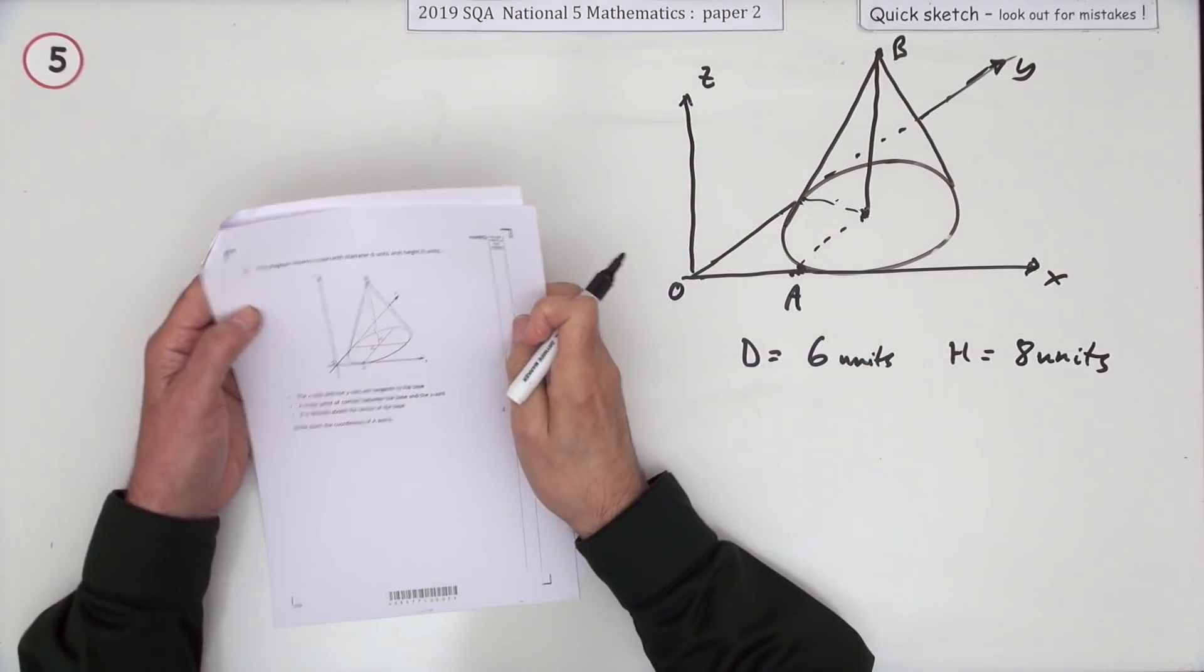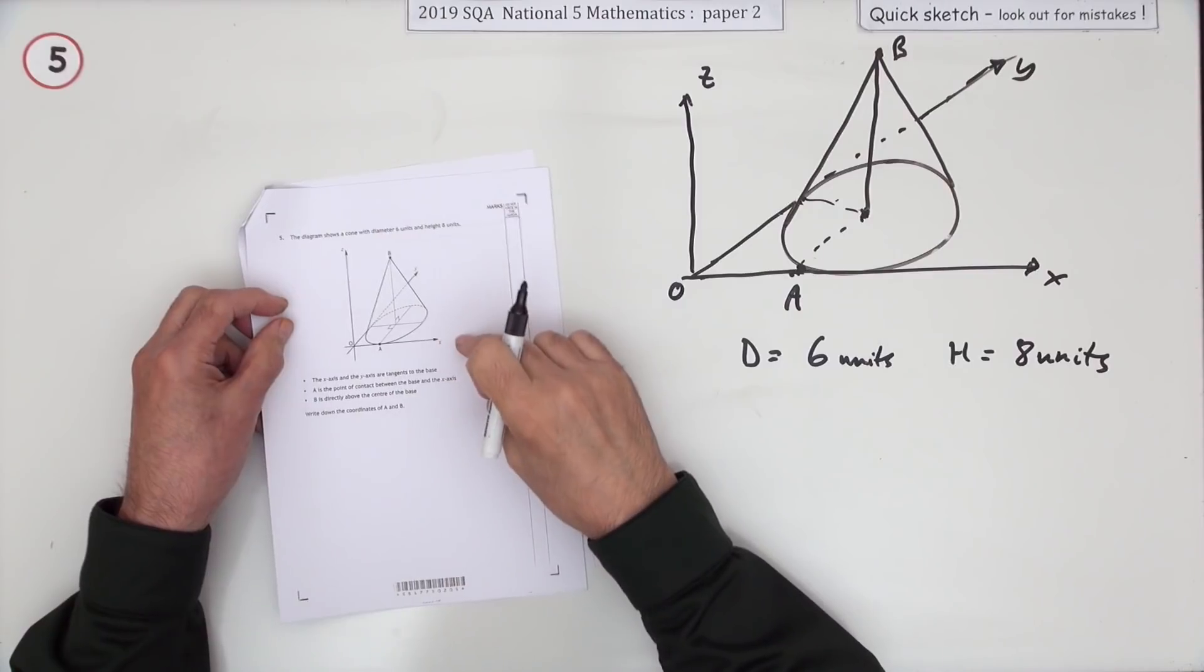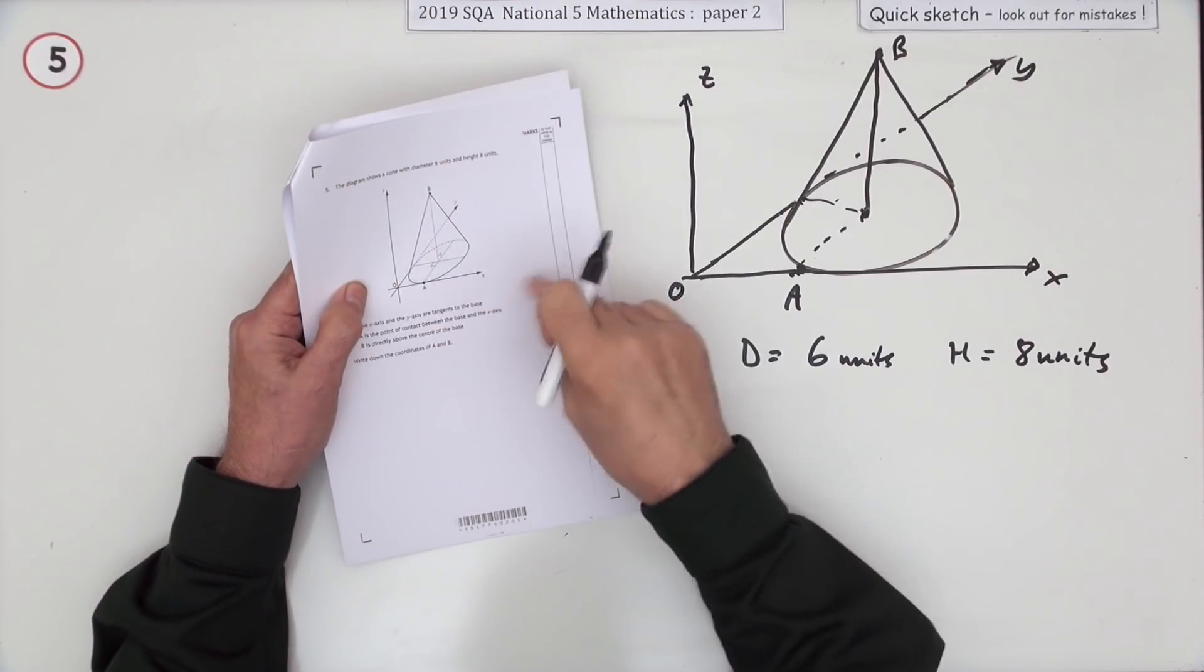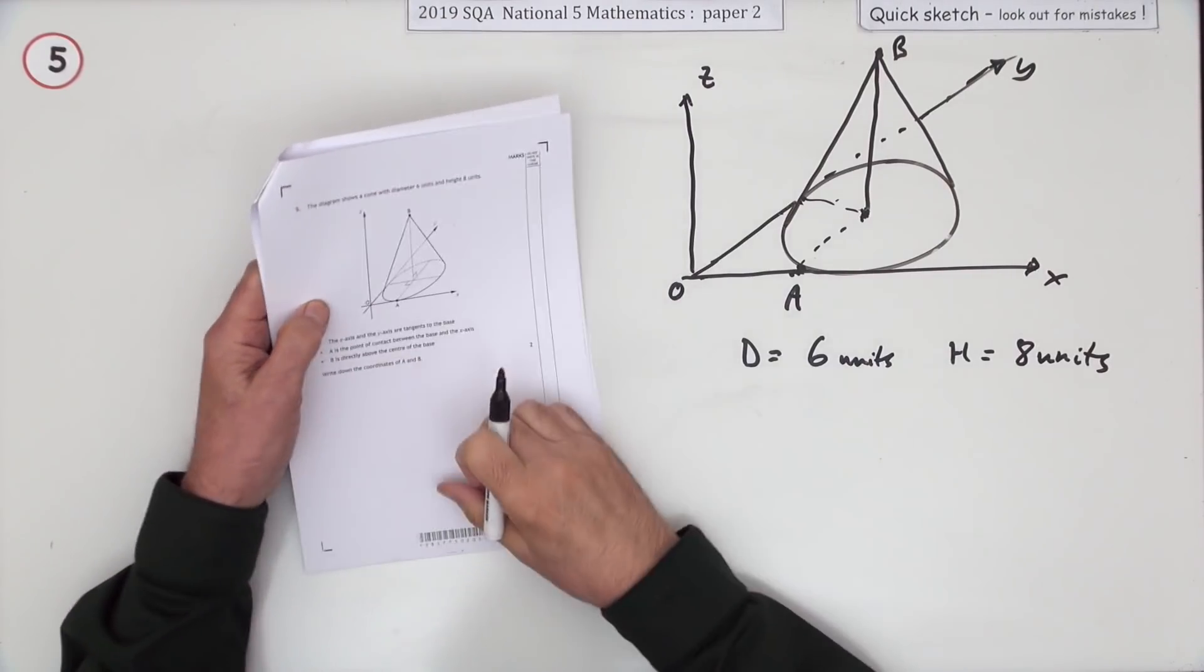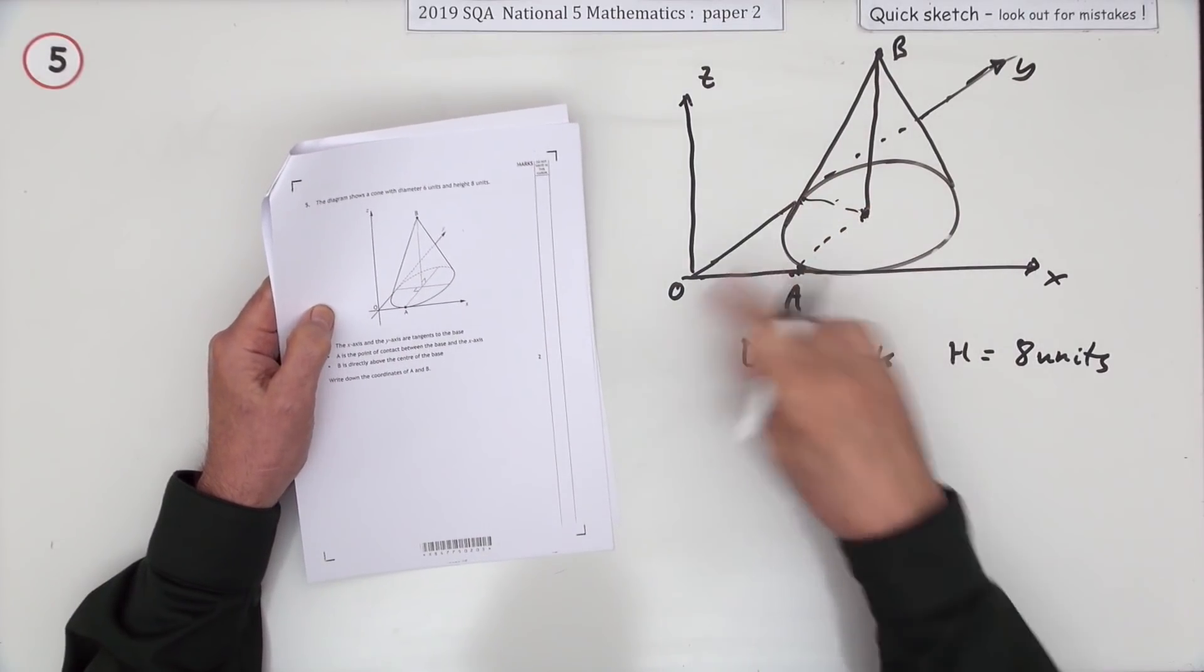Question five from paper two of the 2019 National 5, just two marks here on three-dimensional coordinates. You can see that with the x, y, and z axis you're given this diagram. I've produced a sketchier one here, just a quick sketch.